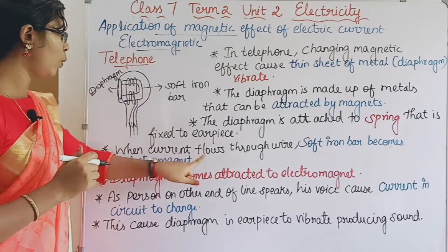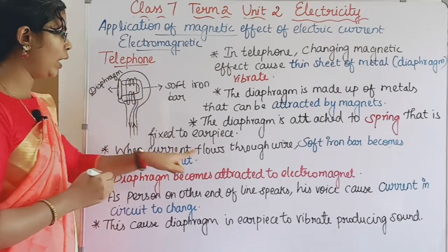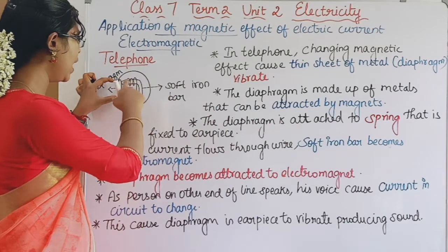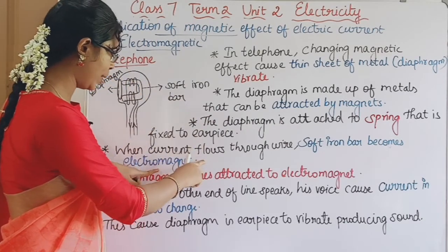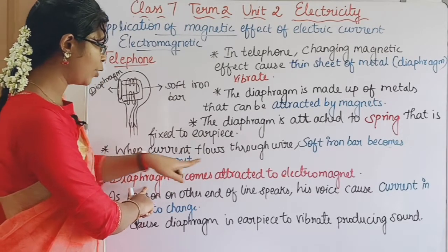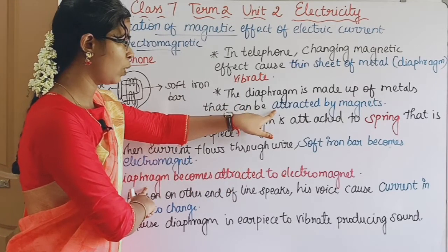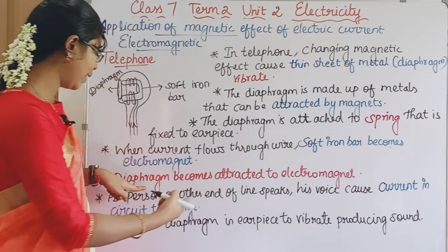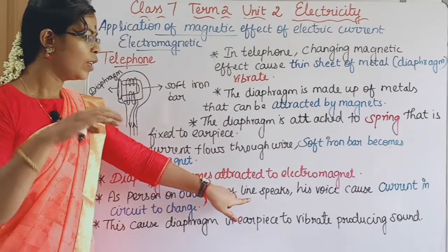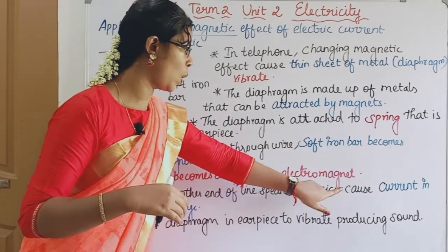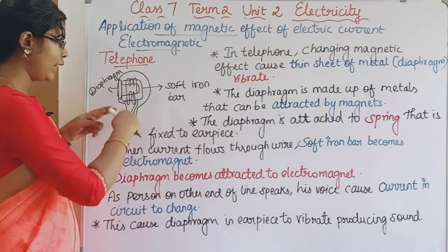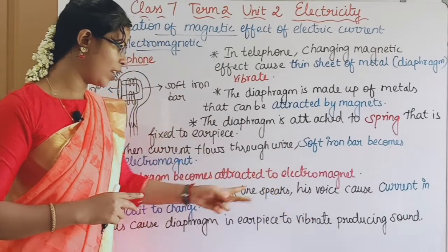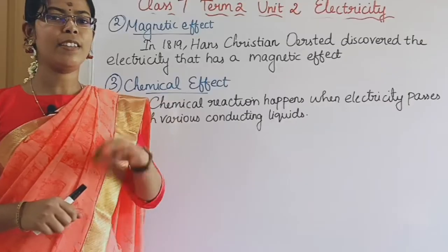When current flows through the wire, there is a soft iron bar that becomes an electromagnet as the current passes through it. The diaphragm gets attracted to it. The current changes and the soft iron bar's magnetism changes. The diaphragm vibrates as the person on the other end of the line speaks. His voice causes the current in the circuit to change, which causes the diaphragm in the earpiece to vibrate, producing sound.